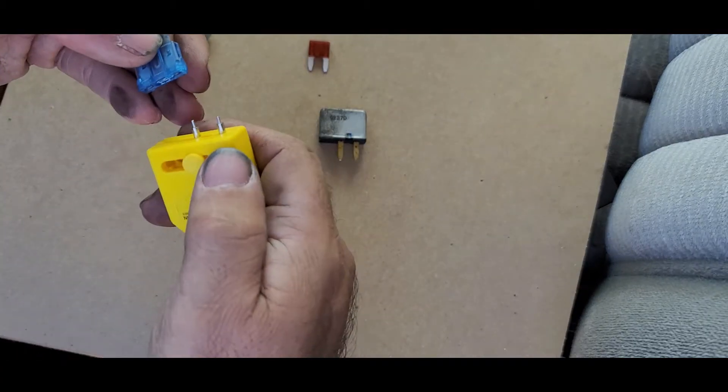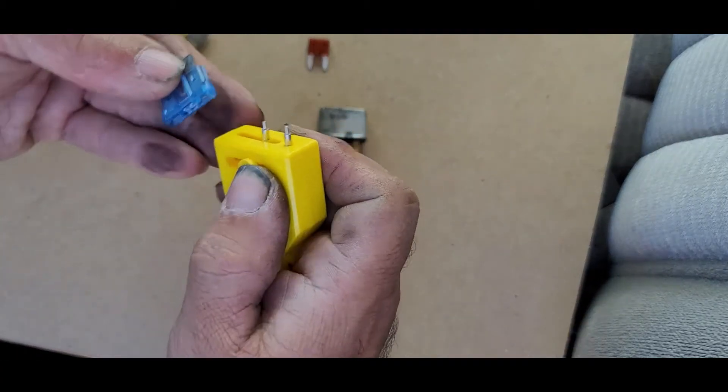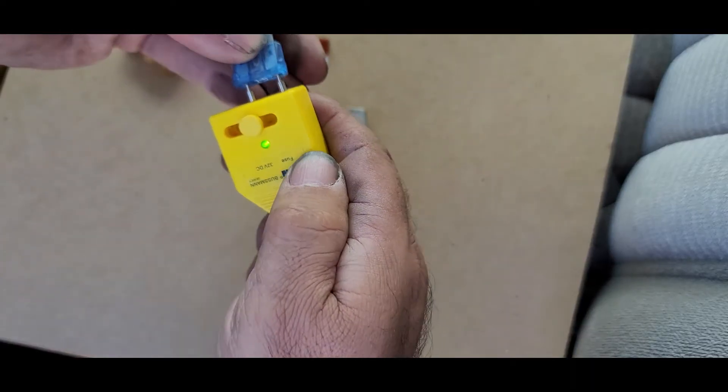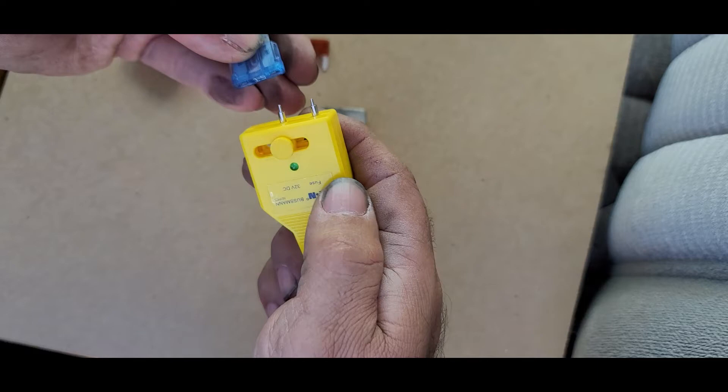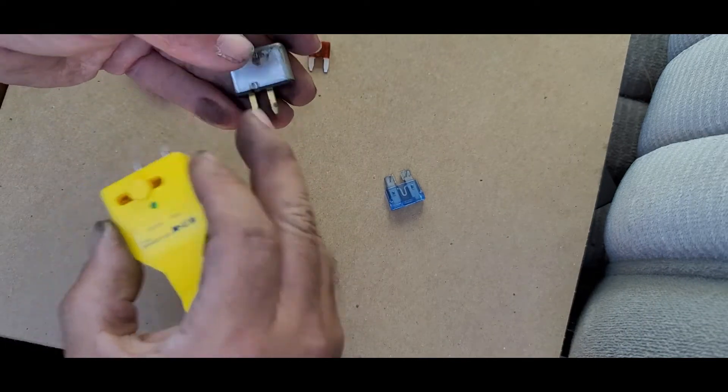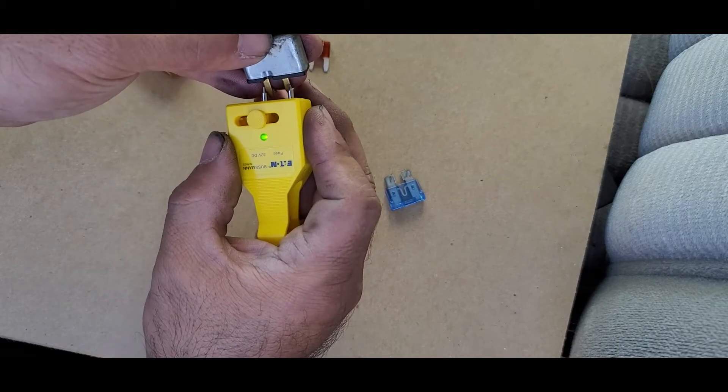And you can test the different size also. This one is the regular size and right here is working. Freightliner used to use this type of fuses with the metal and this one is good to test it.